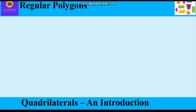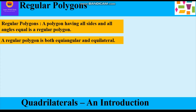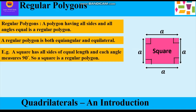Now let us learn about regular polygons. A polygon having all sides and all angles equal is a regular polygon — it is both equiangular and equilateral. Equiangular means all angles are equal; equilateral means all sides are equal. For example, a square has all sides of equal length and each angle measures 90 degrees, so a square is a regular polygon.